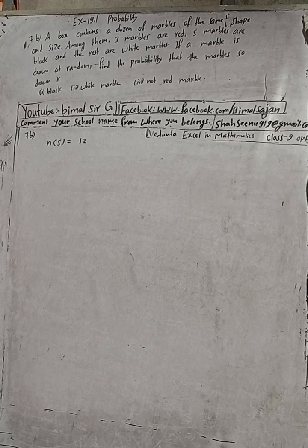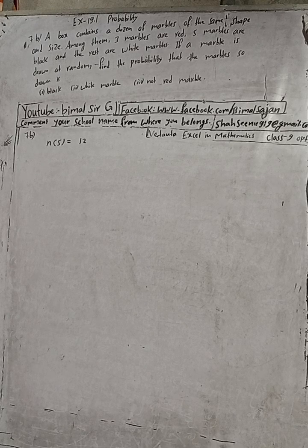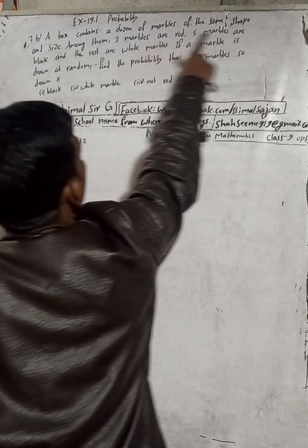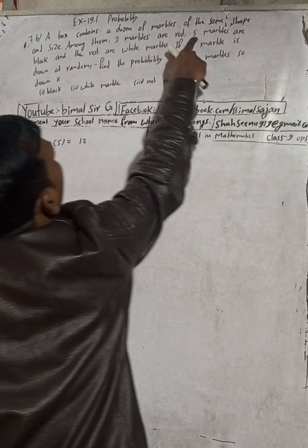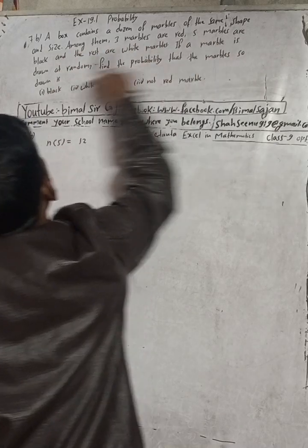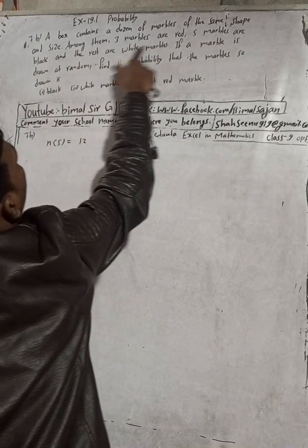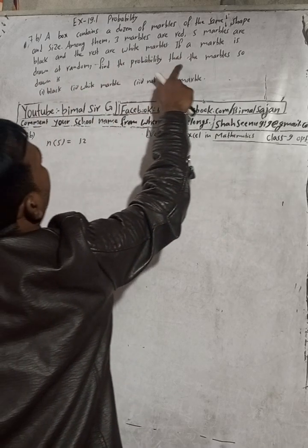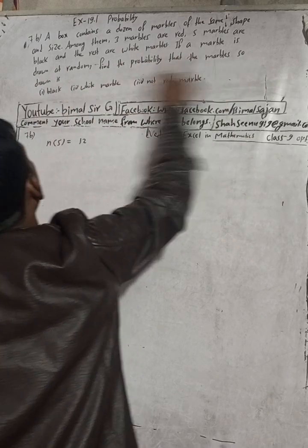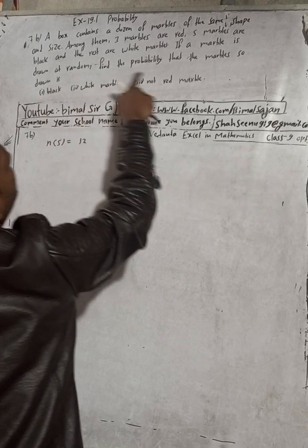If you don't find any mathematics solutions of class 9, then comment and I will try to complete that. Now here the question is: a box contains a dozen of marbles of the same shape and size. Among them, three marbles are red, five marbles are black, and the rest are white marbles. If a marble is drawn at random, find the probability that the marble drawn is: black, white, and not red.